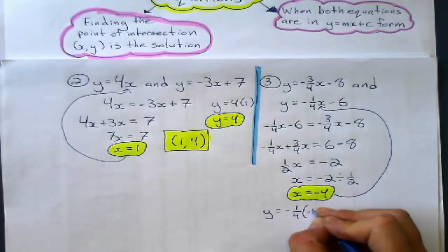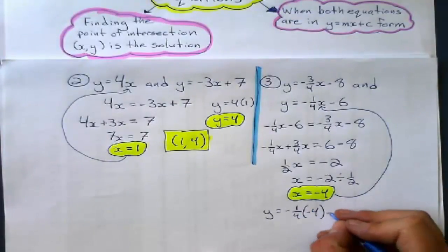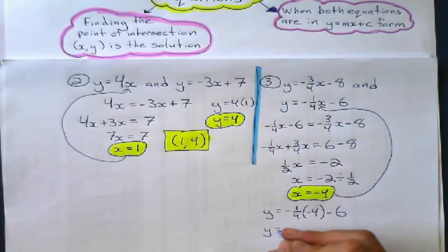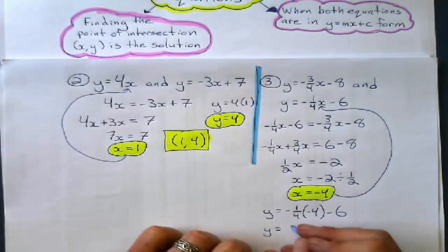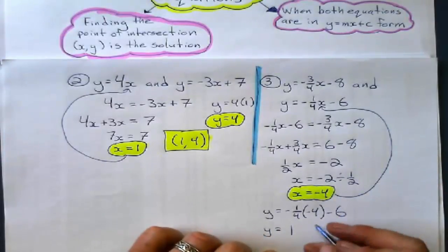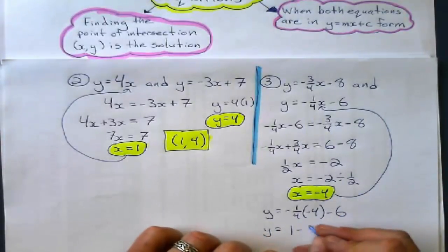y equals negative 1 quarter, in brackets, negative 4 minus 6. Negative 1 quarter times negative 4 is 1, and then 1 minus that 6. Minus 6.